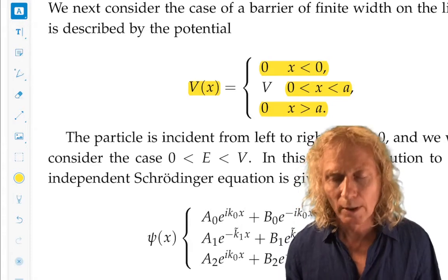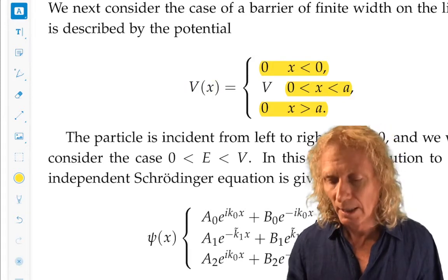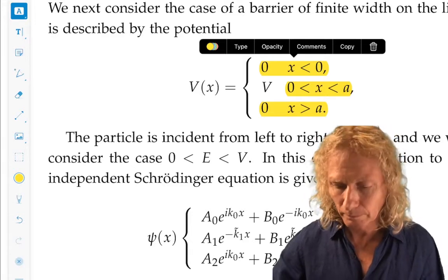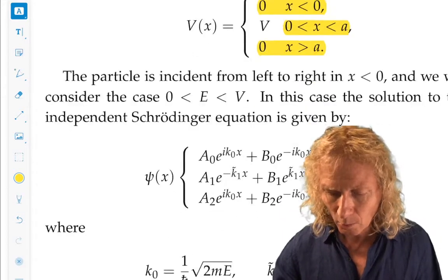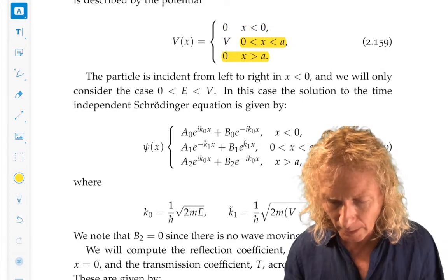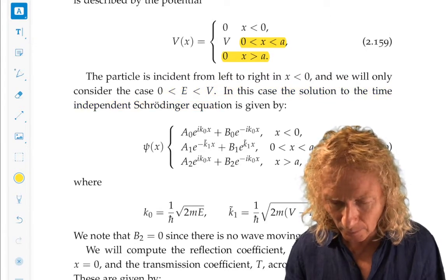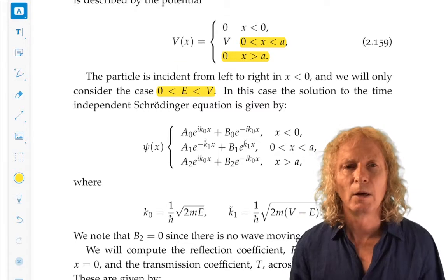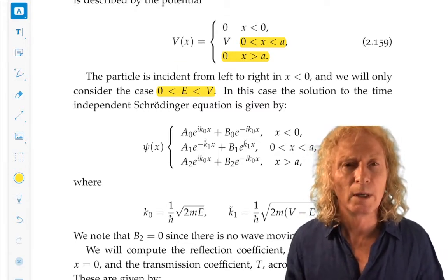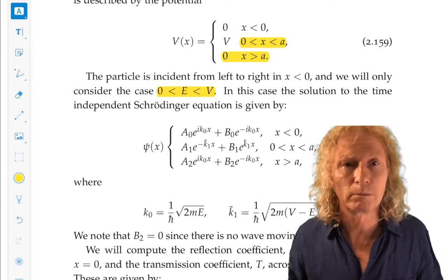Potential is zero to the left and to the right of the rectangle. From this you're going to see what I meant when I said the constant potential we considered earlier is really the basic example which everything is going to be built on. We're only going to consider the case zero less than E less than V because that's the classically forbidden case.